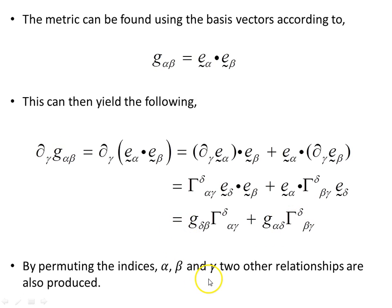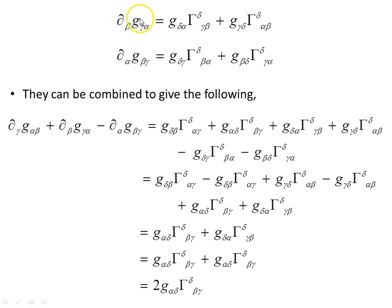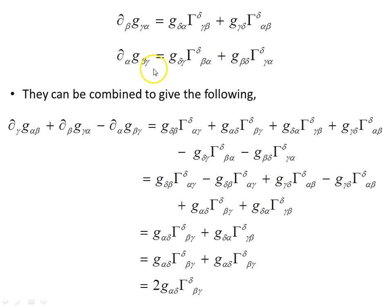We can produce another two of these relationships by permuting the indices alpha, beta, and gamma, and that gives us these two additional objects — just a permutation of alpha, beta, and gamma. We then add the first two of these and subtract the last, so this one and the one on the previous page are added together and the last is subtracted, producing this expression.